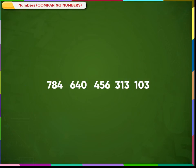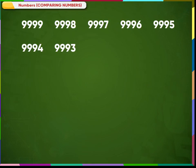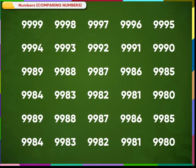Let us now arrange them in decreasing order: 6140, 4256, 3784, 3013, 2103. If we reverse count from 9999 to 1, we are counting in decreasing order — from the largest number to the smallest number.